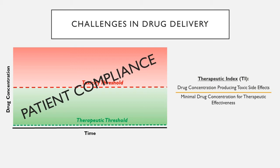An important ratio in this area is the therapeutic index, which is the ratio of the toxicity threshold to the therapeutic threshold. The larger the therapeutic index, the larger the window where safe and effective concentrations can be maintained below the toxicity threshold. A very narrow therapeutic window results in a relatively low therapeutic index — dangerously close to one — meaning very little room to work with in the drug delivery system.